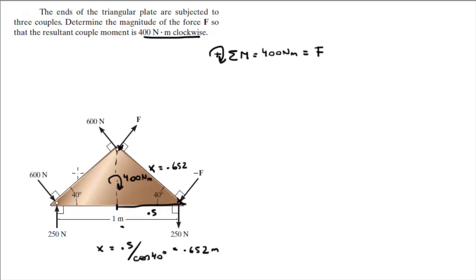Back to our equation, the couple moment created by this F force is calculated by doing F times the distance between them from here to here which is 0.652.